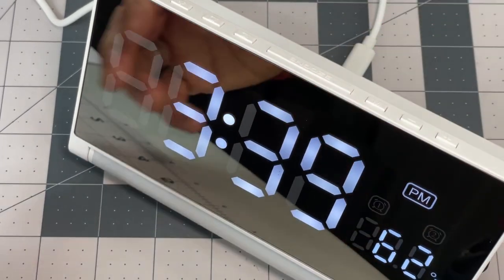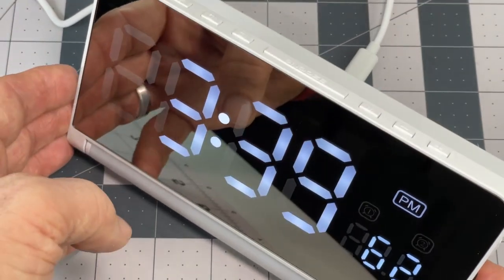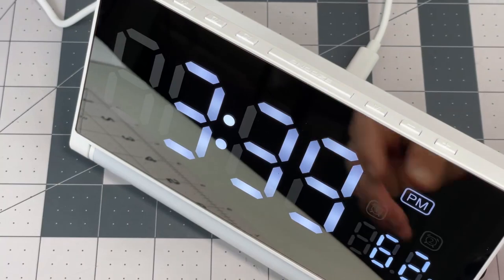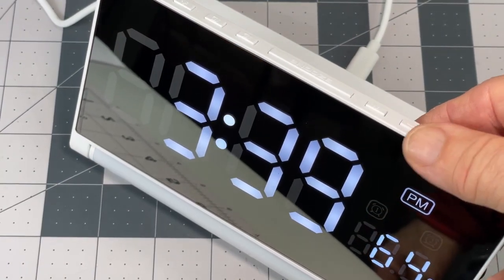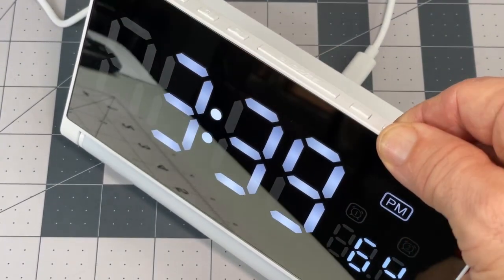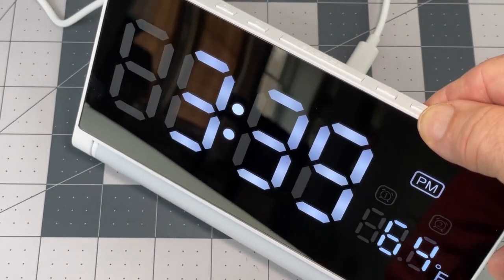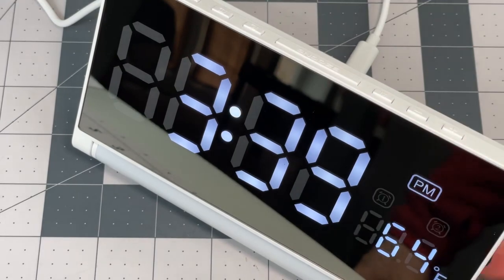One thing I found is even having this unplugged for a couple of days, it actually maintained the time. So once you set it, if power goes out during the night, it will come back on. Obviously your alarm's not going to go off if there's no power, but at least it will know the time.